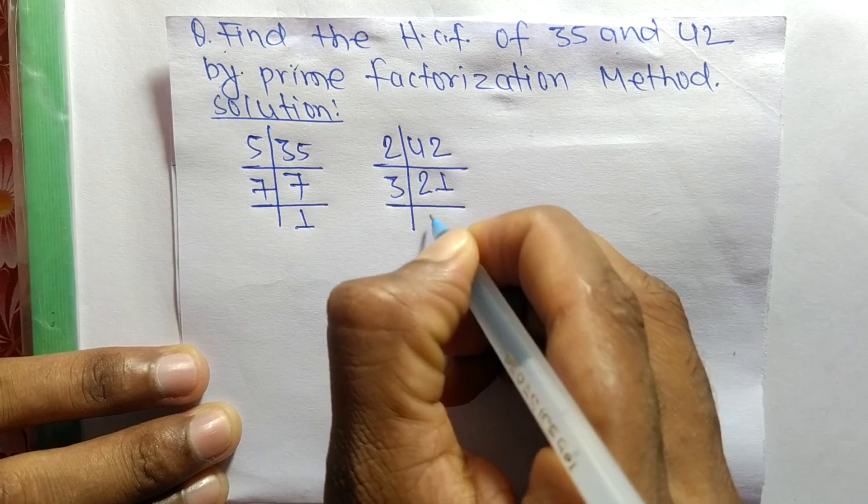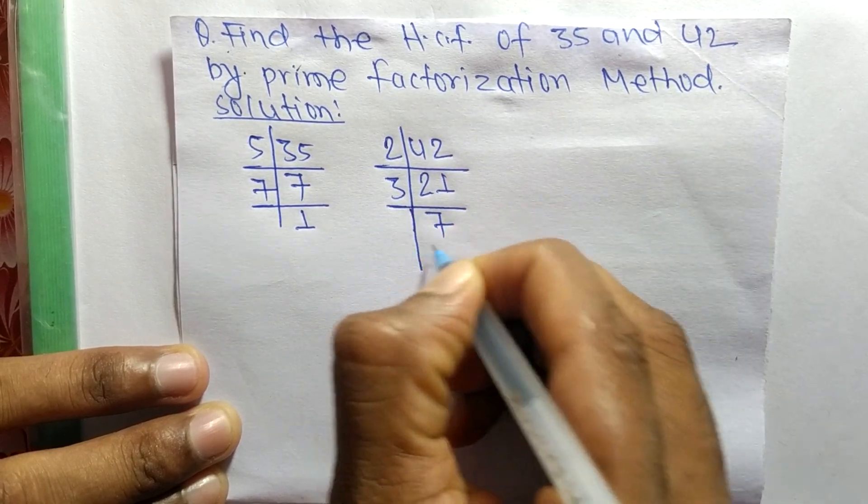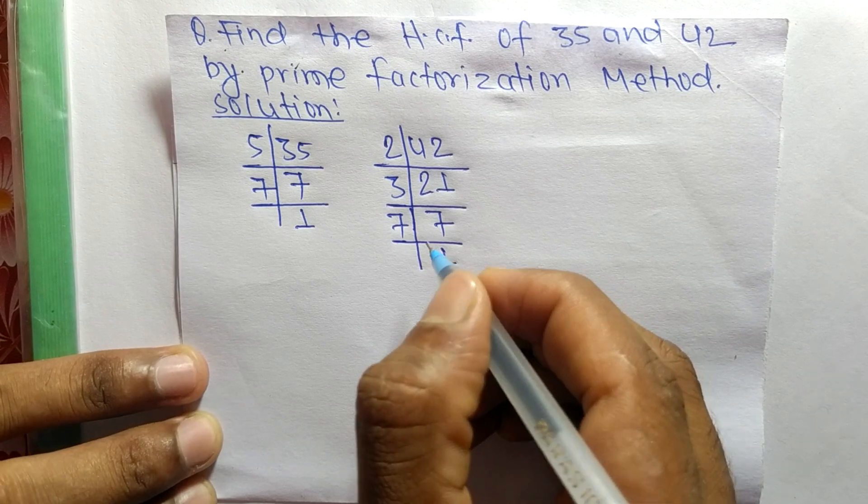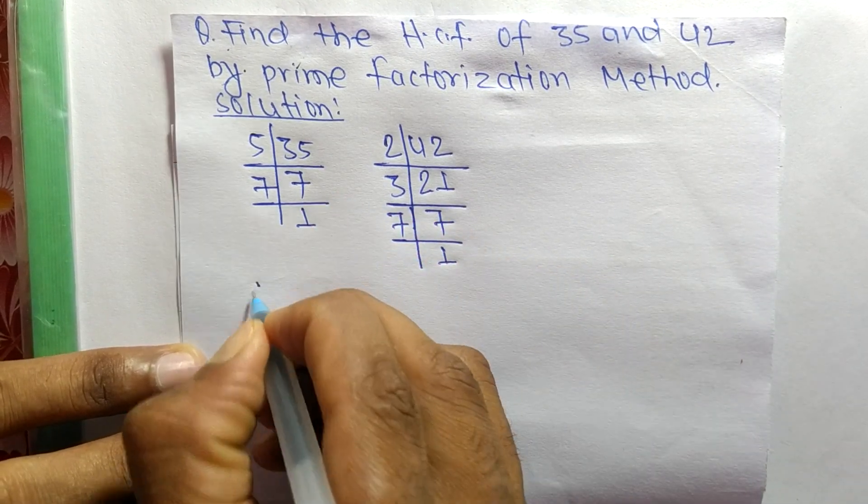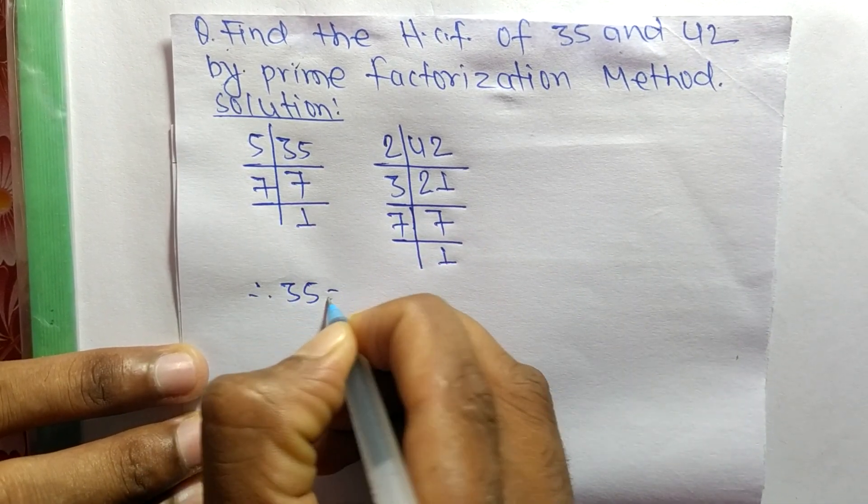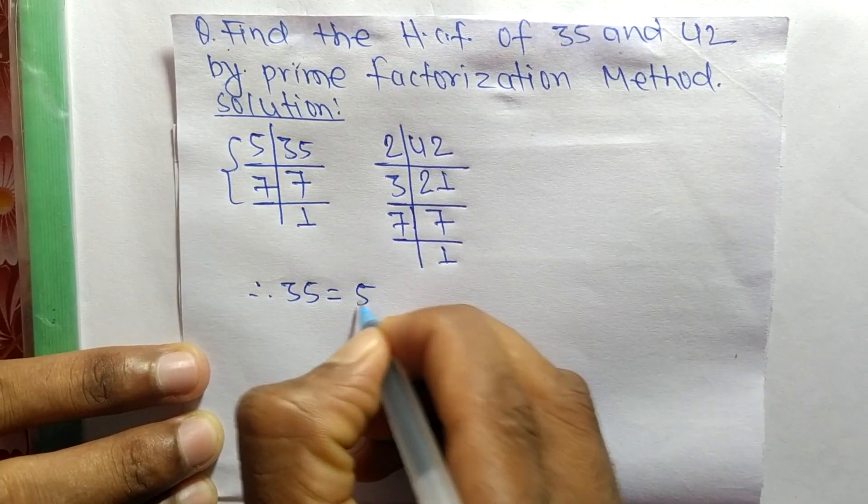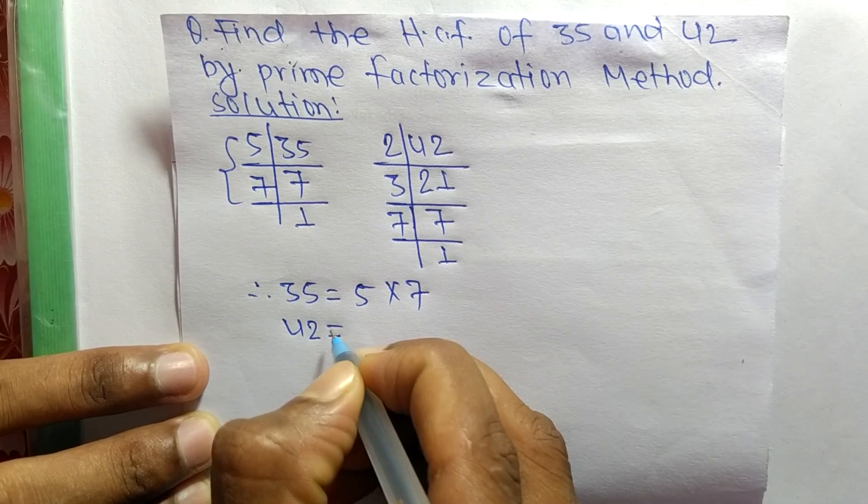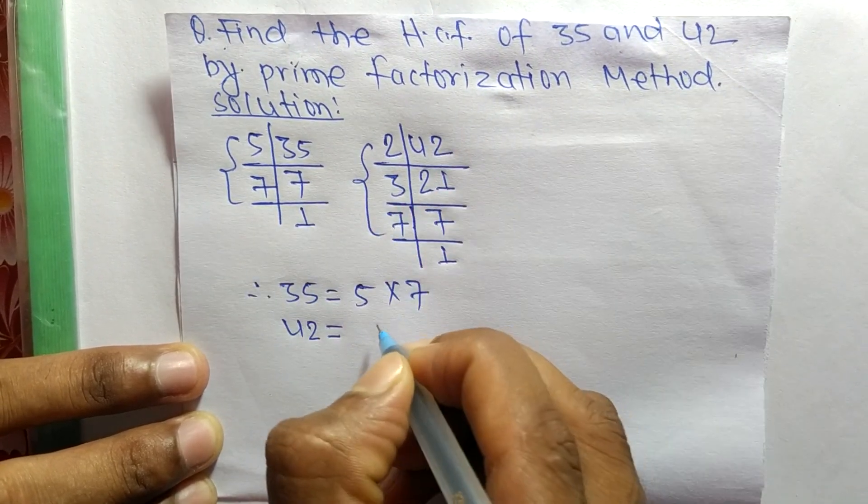3 times 7 equals 21, and 7 times 1 equals 7. Now from these prime factors we can write 35 is equal to, from here, 5 into 7. And 42 is equal to, from this part...